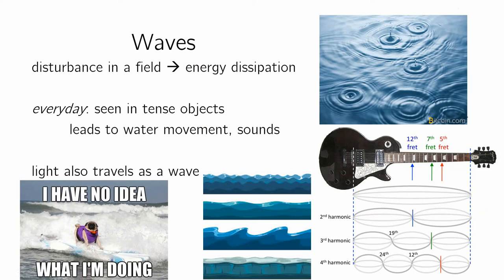Waves are disturbances in a field. You can think of them like how a field might respond to you pushing on it or something disturbing it, and energy will dissipate as a response. Like you can see in the picture of water — when you throw a rock or a pebble in the water, you're creating a disturbance, and the water dissipates this energy by creating concentric circles. You can think of waves in the ocean as a disturbance due to wind or gravitational forces that move energy from one area to the next.